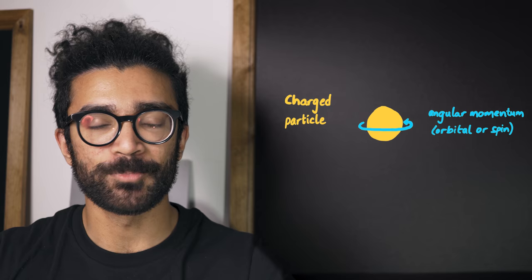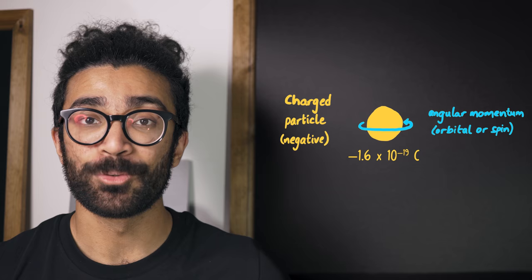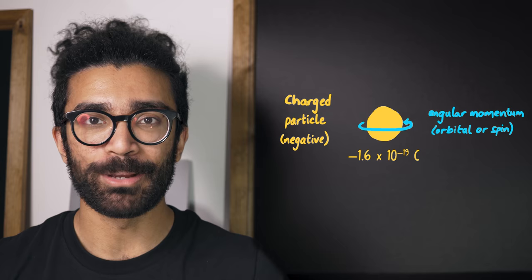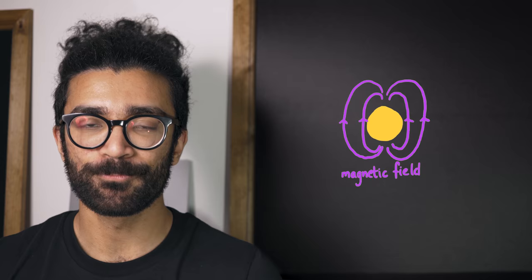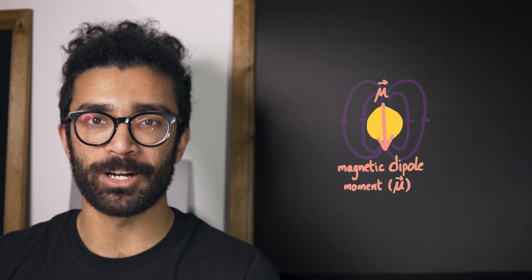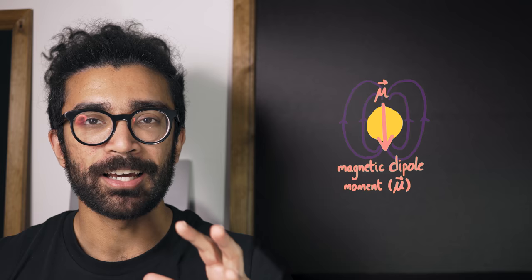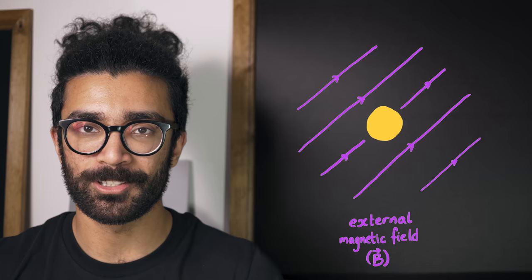Electrons, as we know, are charged particles. They have a charge of minus 1.6 times 10 to the power of negative 19 coulombs, roughly speaking. And when charged particles have angular momentum, they display the ability to interact with magnetic fields. These spinning charges behave like little magnets, and thus they have a property known as the magnetic dipole moment. Now, the magnetic dipole moment is essentially a vector quantity that just measures the size and direction of this little magnet created by our spinning charge.